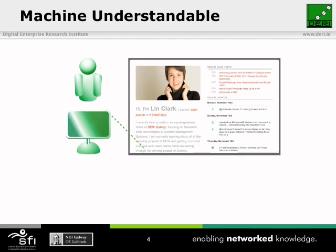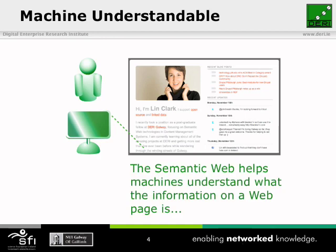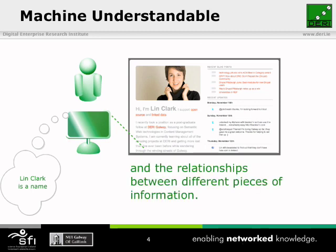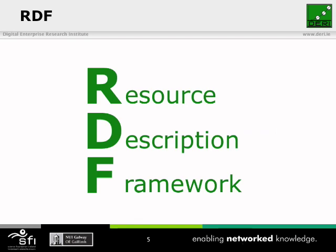When a machine is looking at the information, it doesn't see these context clues. It just sees a bunch of characters and some images on a page. So what the Semantic Web does is it makes the web machine understandable. It makes it so that machines understand what the information on a web page is — like the fact that Lynn Clark is a name — and also makes it so that the machine understands the relationships between different pieces of information on that page, like lynnclark.jpg is a picture of a person named Lynn Clark. And it does that using the Resource Description Framework, or RDF.